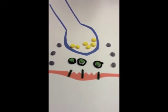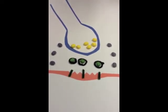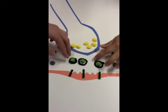Once the acetylcholine is released into the synaptic cleft, it binds to the receptor sites on the motor end plate.